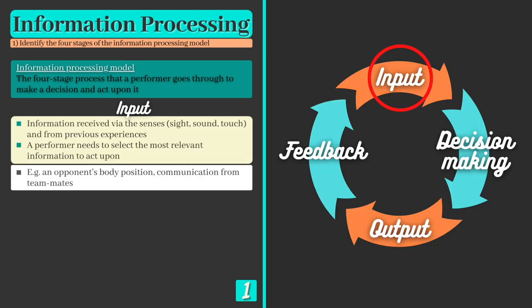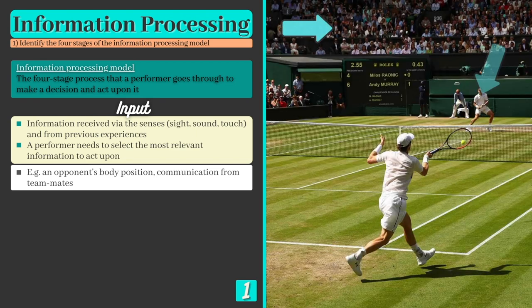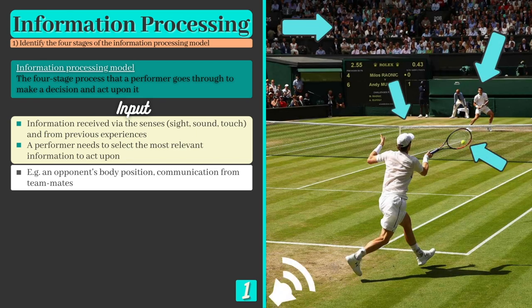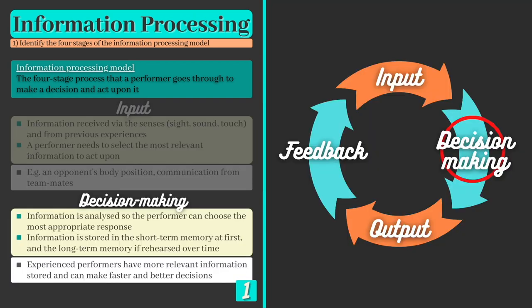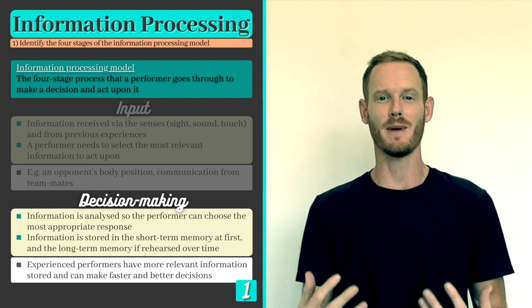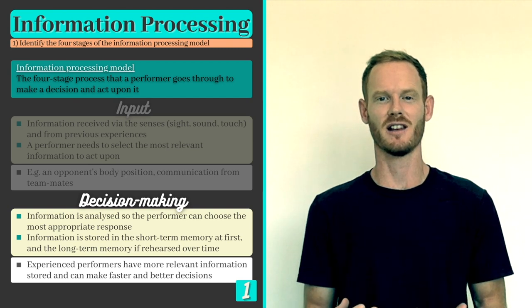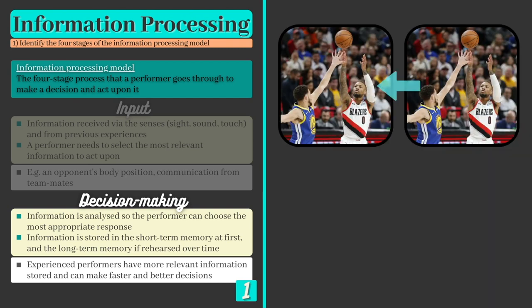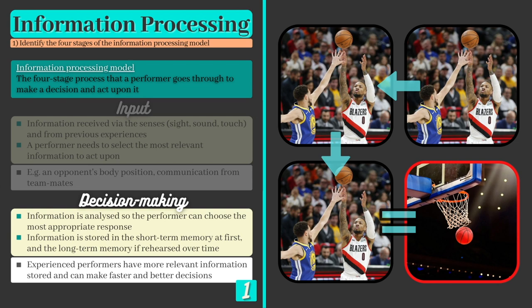The first is the input stage, where information is received via the senses. A great deal of information may be received, so the performer must select the most important information to focus on. Next is the decision making stage, where the information is analysed and a decision is made. Experienced performers are likely to make faster and better decisions as they have faced similar situations many times before and have stored these experiences in their long term memories.